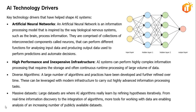The availability of necessary storage and compute resources via cloud platforms based on pay-per-use agreements makes infrastructure even more accessible. The next technology driver is diverse algorithms. AI and deep learning have been evolving for decades, and as a result, a large range of algorithms and practices have been developed and further refined over time. These can now be leveraged with modern infrastructure to carry out highly advanced information processing tasks, and several of these algorithms were also developed through the evolution of machine learning.